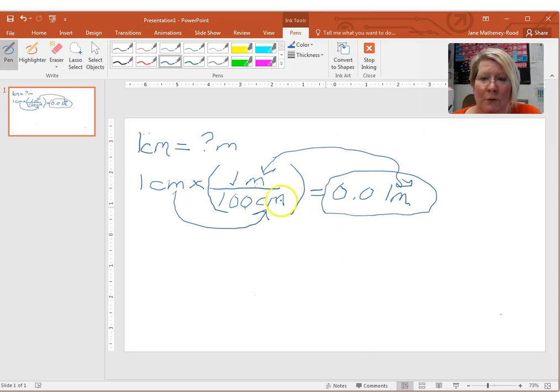So every time you have a conversion problem this is the manner in which you should set it up. Starting with your units you're converting, that goes to the bottom of the fraction, the units that you're converting to goes in the top, and what happens then is you see centimeters cancels and you're left with meters and that is what we wanted.